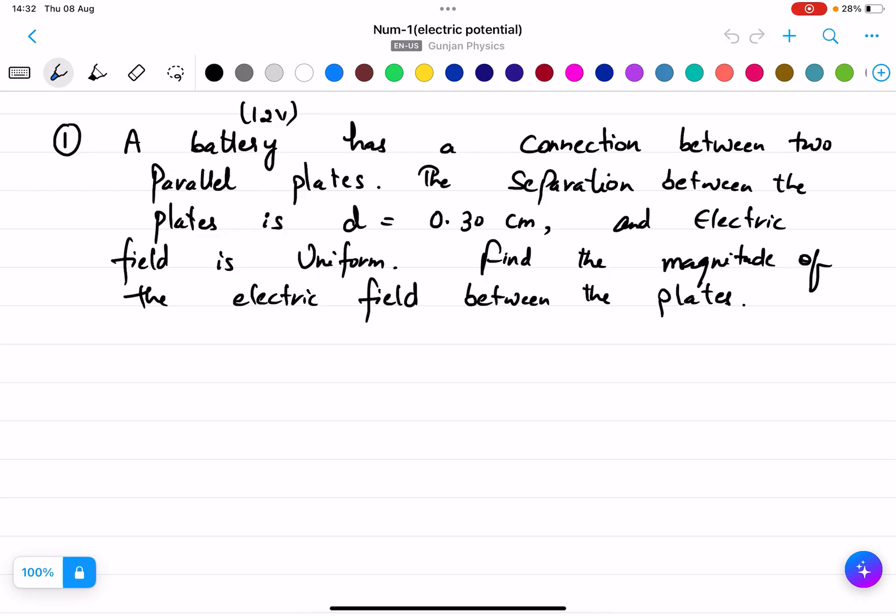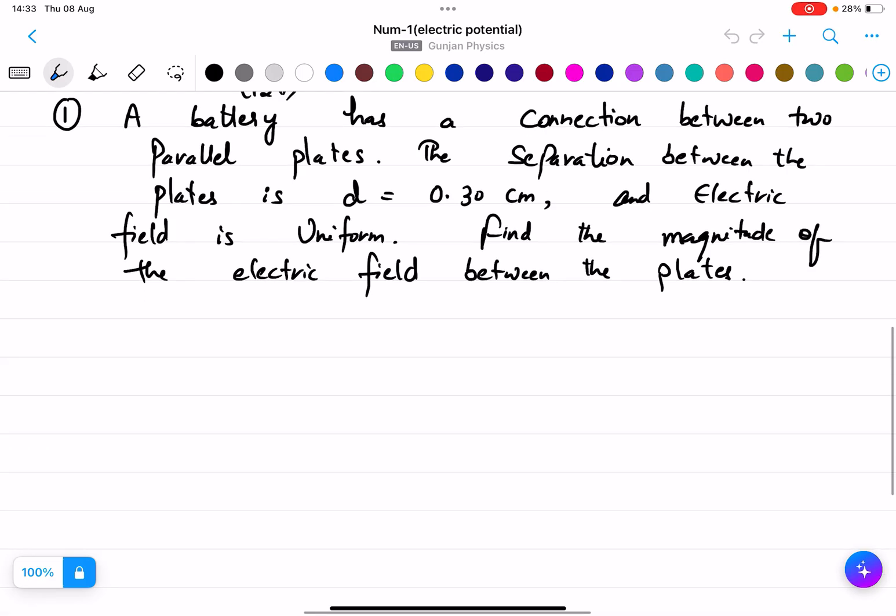Find the magnitude of the electric field between the plates. Like I explained in the previous topic, what is the formula when the electric field is uniform? So the formula is ΔV = -Ed.